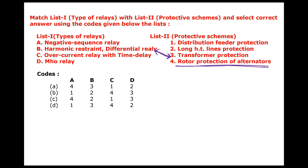Mho relay is used for long transmission lines. Overcurrent relay with time delay is used in distribution feeder protection. So: negative sequence relay → rotor protection in alternators; harmonic restrained differential relay → transformer protection; Mho relay → long high voltage transmission lines; overcurrent relay with time delay → distribution feeder protection. The correct option is the right answer.